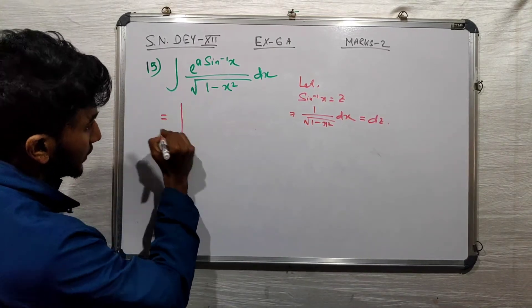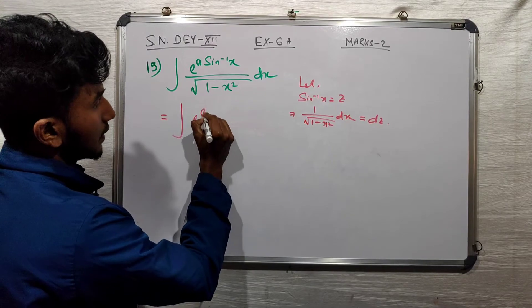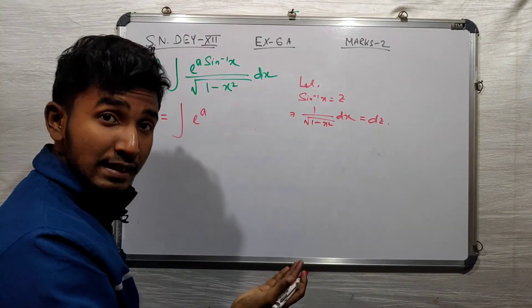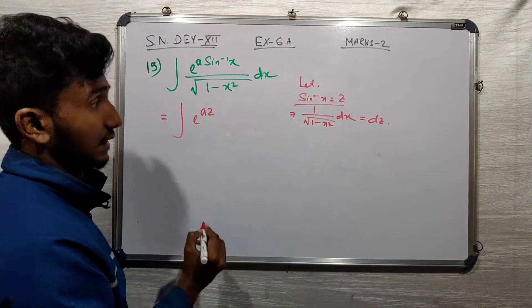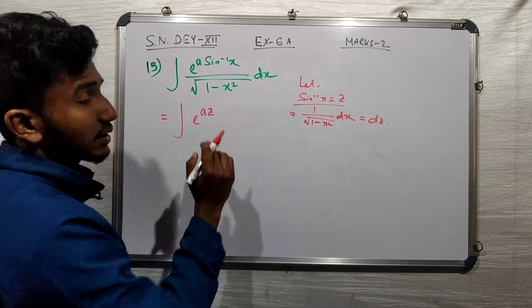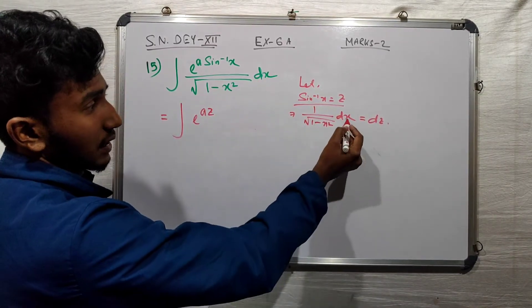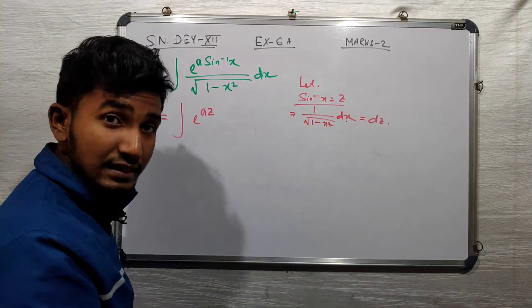So the integration becomes e to the power a z dz by root over 1 minus x squared.